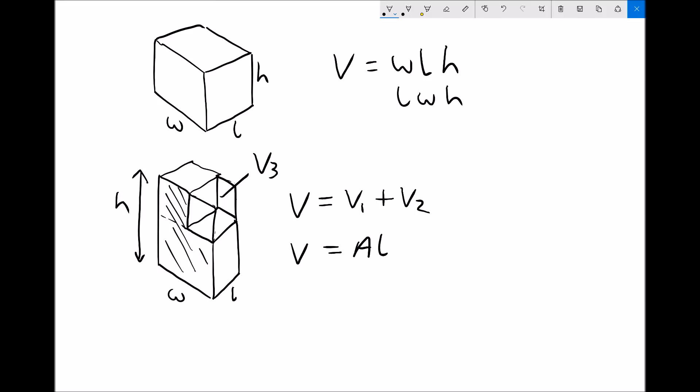we would then need to subtract this volume here which I'm going to call V3. So an alternative way of looking at that shape or the volume of that shape would be volume equals length times width times height to give the outer volume and then minus V3 because that piece of material has been taken away.